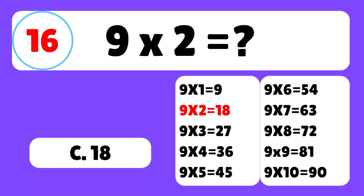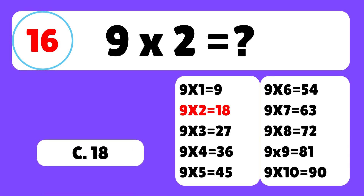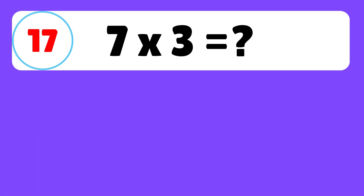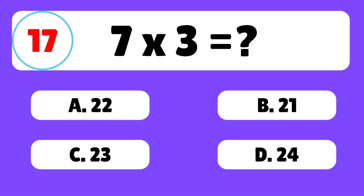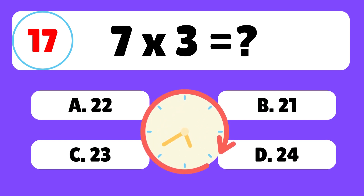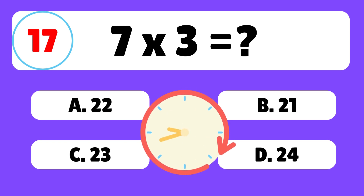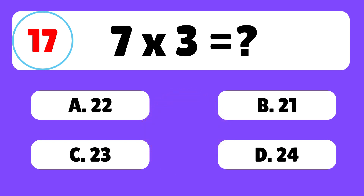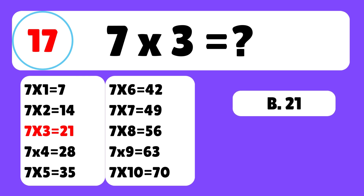Question 17. What is 7 times 3? The answer is B. 7 times 3 is equal to 21.